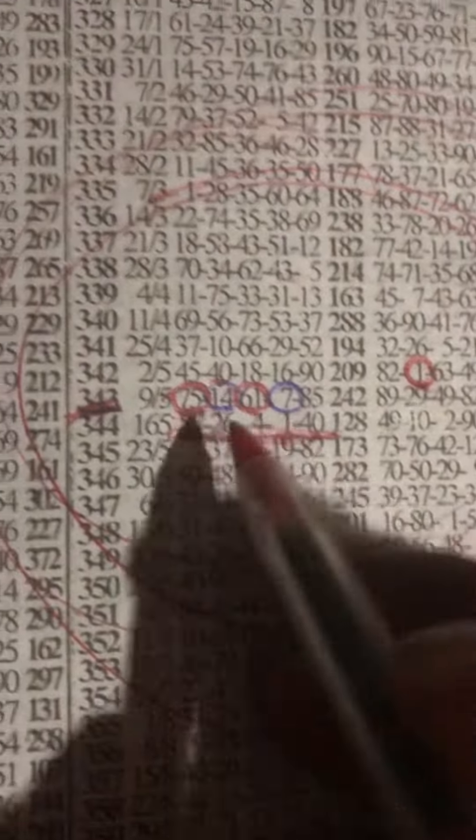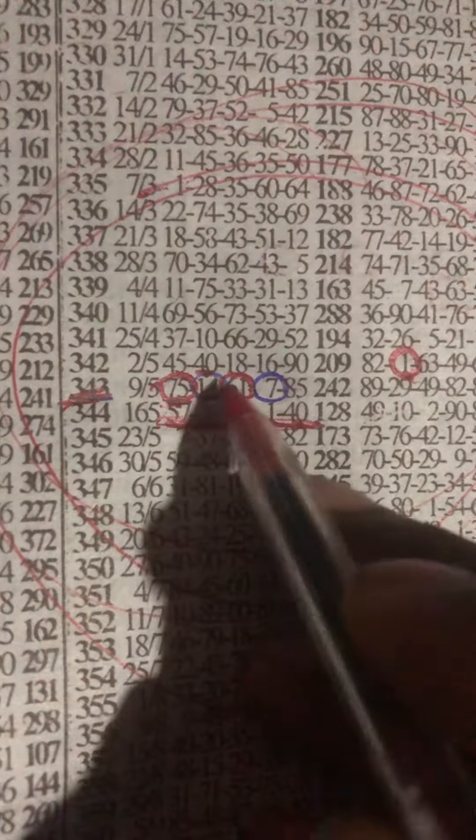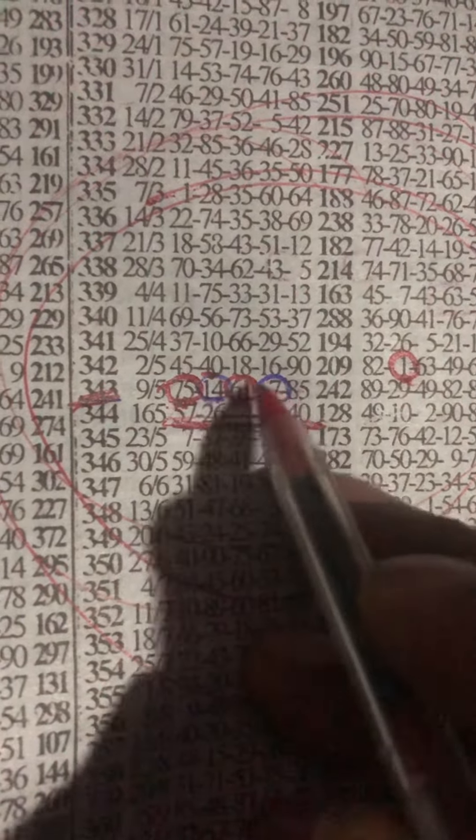On this plan, 75 plus 61 will give you an addition of 21. Here we got 40, here we got 40.